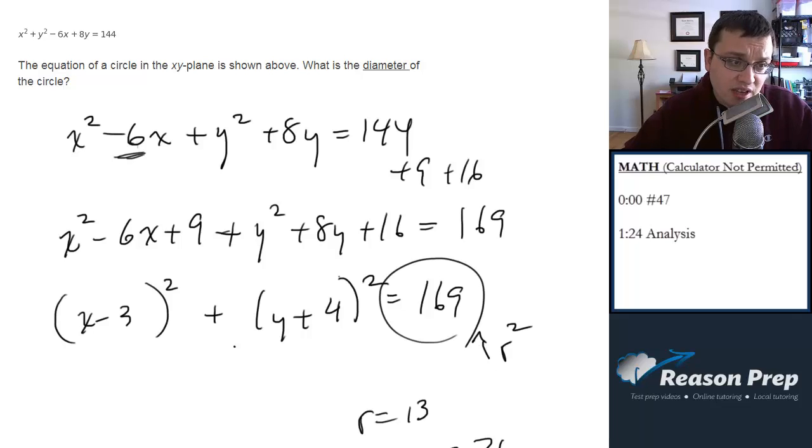As has been the trend in this test so far, this is a very standard Algebra 1, Algebra 2 type question where you're dealing with conic sections. You're given an equation, you have to make it into the standard form of the circle so that you can find the radius and the center. In this case we're looking for the diameter but it's a standard question.